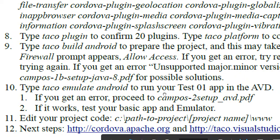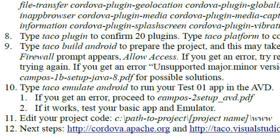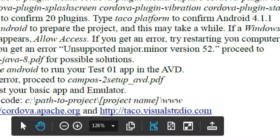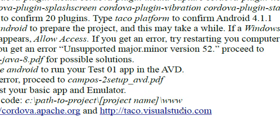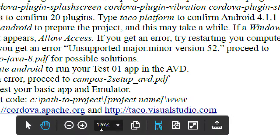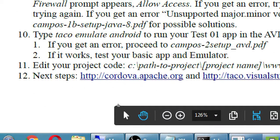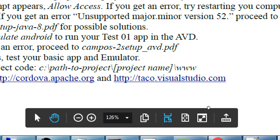Another failure point: when we did 'taco emulate android' we already had an emulator ready — I've already set it up. At home if the emulator doesn't appear, that's what Campus handout number 2 covers — how to set up an Android Virtual Device. All of the code we care to edit is inside our project folder's 'www' folder; every other folder you don't really need to touch. The main stuff that matters is CSS, HTML, JavaScript.